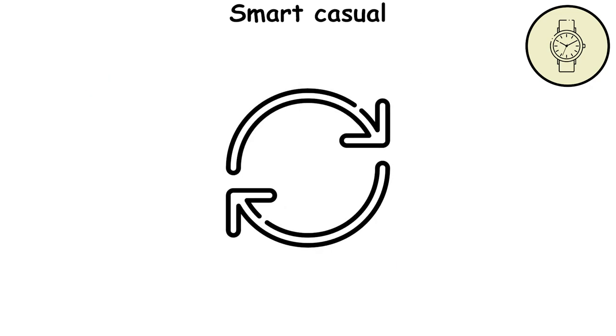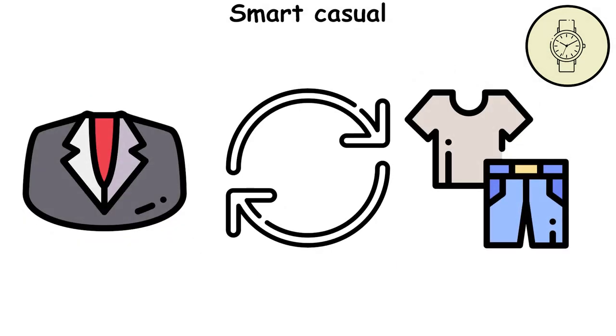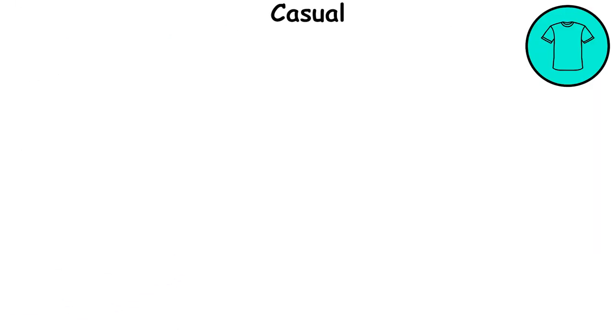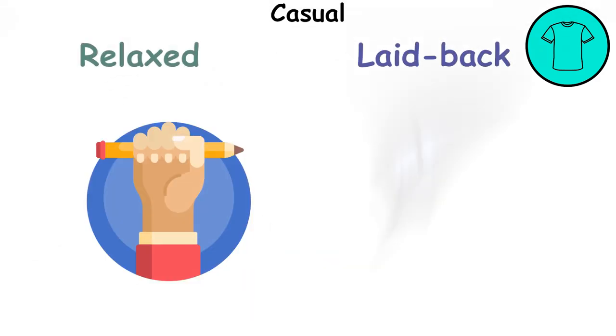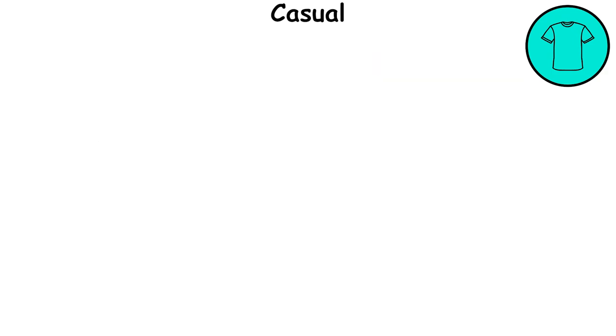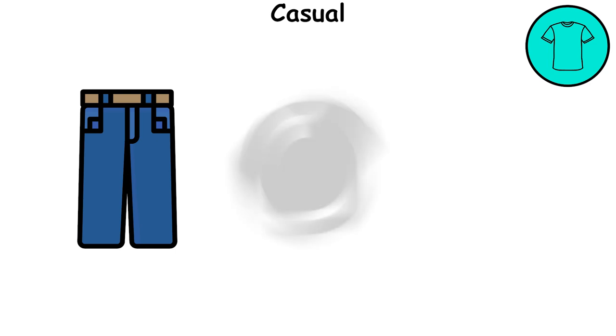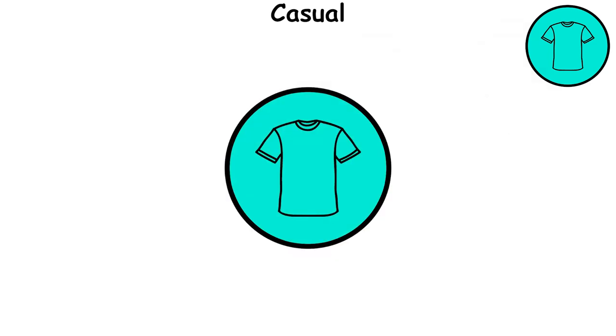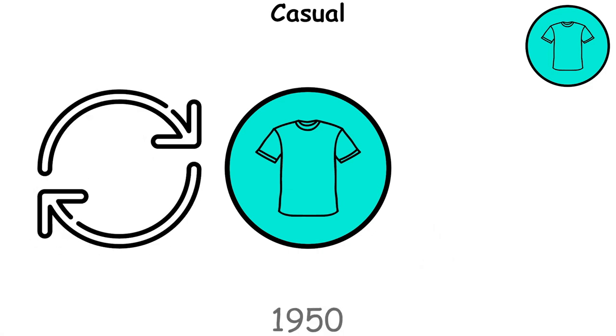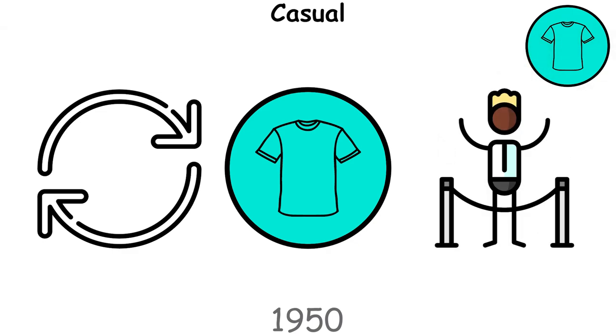It's about mixing elements of formal and casual wear to create a comfortable yet polished look. The casual style is all about comfort and individuality. It's a relaxed and laid-back approach to dressing that prioritizes personal expression and ease. This style is often characterized by everyday items like jeans, t-shirts, and sneakers. The roots of casual style can be traced back to the 1950s, a time when societal norms were shifting and people were seeking a departure from the formality of previous decades.